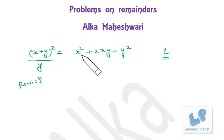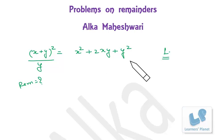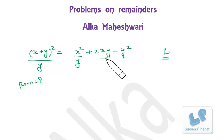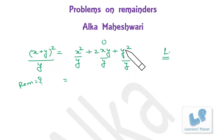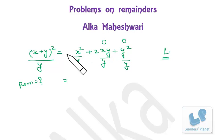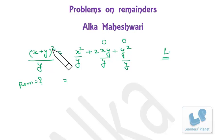Find the remainder when x² is divided by y, when 2xy is divided by y, and when y² is divided by y. Here, 2xy is a multiple of y so the remainder is 0, and y² is a multiple of y so the remainder is 0. We are left with x² only. So (x+y)² when divided by y gives remainder x².